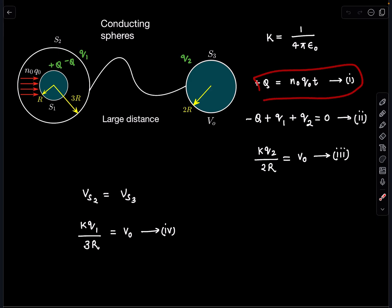Now the next equation: this system of S2 and S3 is isolated, not connected with anything else outside. So net charge on this system is going to be zero. I can say -Q + q₁ + q₂ = 0.